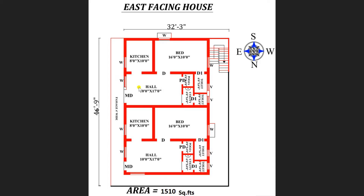Moving towards the first portion — this is the main entrance. When you enter, you can view the hall with dimensions 10 feet by 17 feet, a very comfortable hall. On the left hand side you can view a kitchen room of 8 feet by 10 feet. This is also a fully ventilated plan.